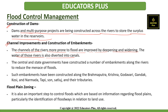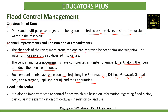Water from flood-prone rivers is also diverted into canals. The central and state governments have constructed a number of embankments along rivers to reduce the menace of floods. Such embankments have been constructed along the Brahmaputra, Krishna, Godavari, Kosi, Narmada, Tapi, Sutlej, and their tributaries.